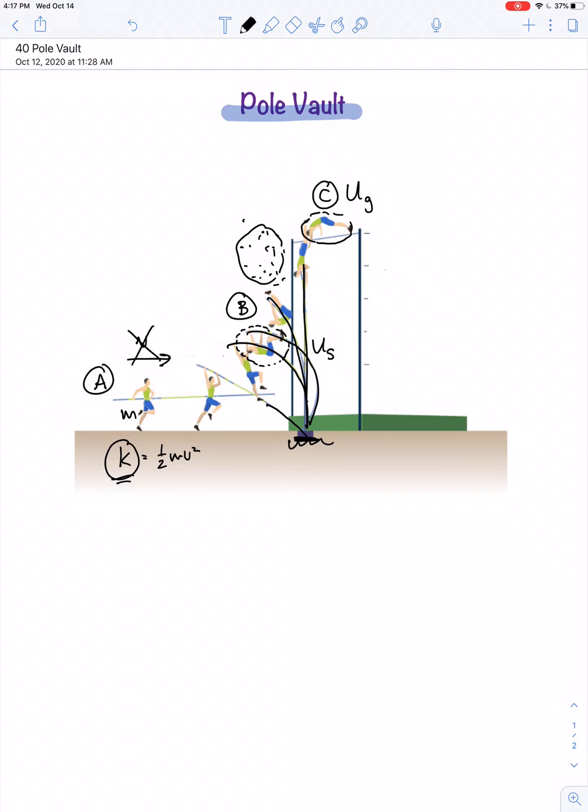So, the question here is, how do these forms of energy compare? How does the kinetic energy at point A compare to the elastic potential energy at point B compare to the gravitational potential energy at point C? Well, if you're tracking with me, I think you know where I'm going with this one. The kinetic energy at point A is equal to the elastic potential energy at point B, which in turn is equal to the gravitational potential energy at point C.